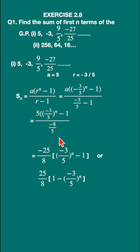The expression will have a negative sign, so minus 25 upon 8 into whatever is in the bracket. Write it as it is. So this is the answer, or you can simplify it further.